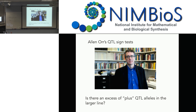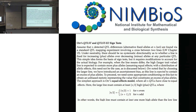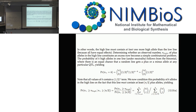Orr's basic idea in the QTL sign test is: I do a whole bunch of QTLs and I simply ask, is there an excess of plus — or increasing — alleles in the larger line? Obviously the larger line is going to have more plus alleles. The simplest version is the equal effects model, where all N QTLs are chosen to have equal effects. If I take the larger line, obviously it's going to have one or more extra plus alleles relative to the smaller line — that's ascertainment, but we correct for it.